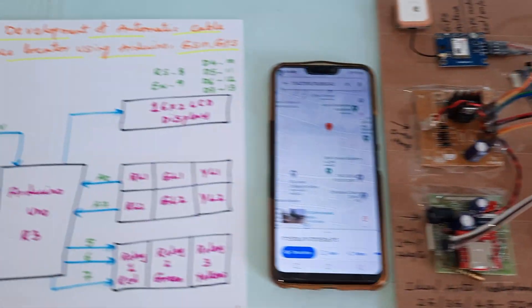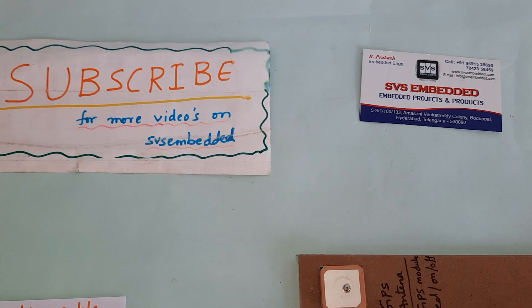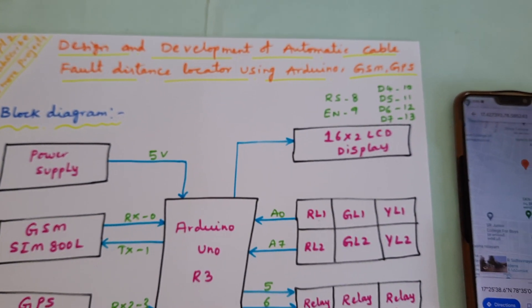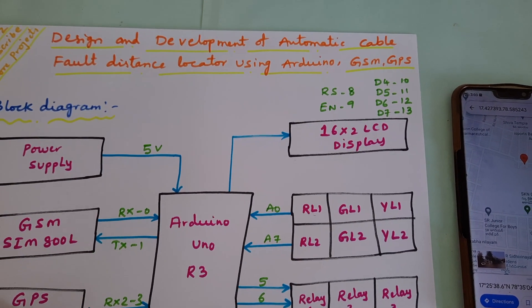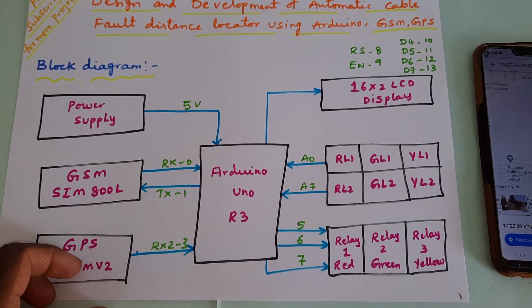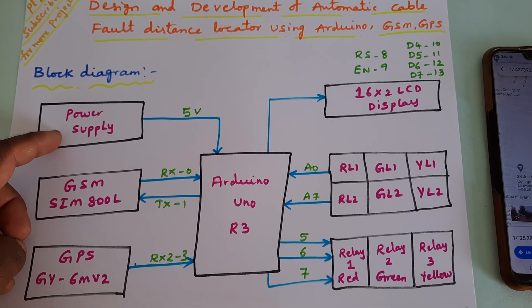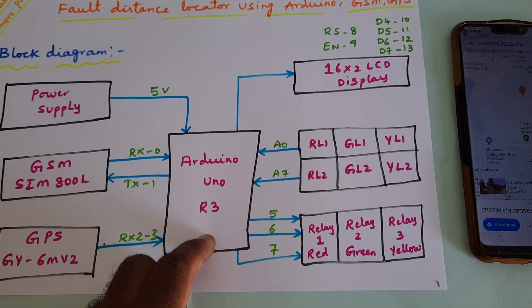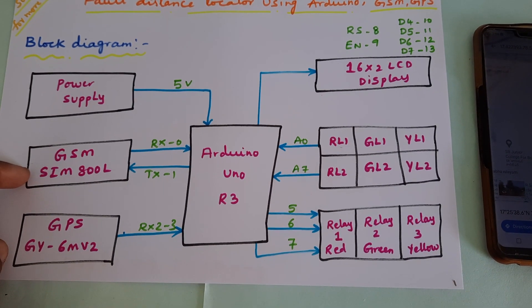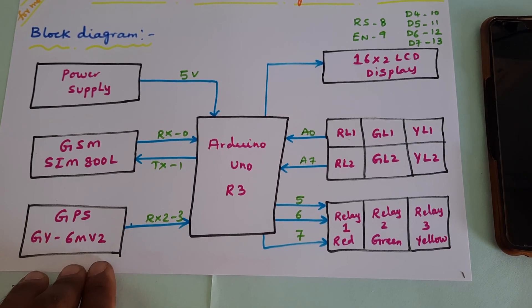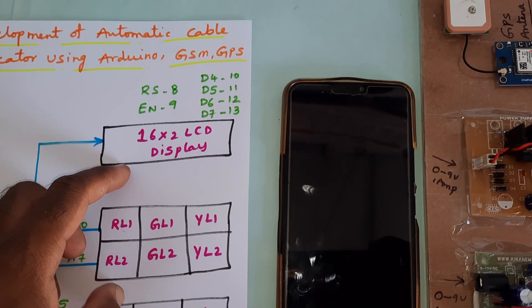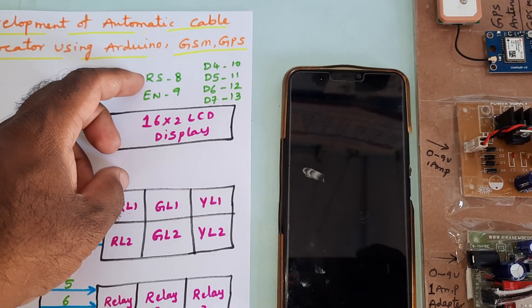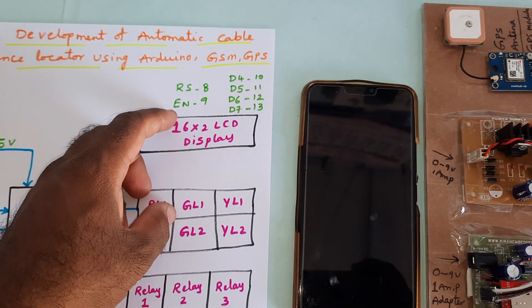Hi, we are from SVS Embedded. The project title is design and development of automatic cable fault distance locator using Arduino, GSM, and GPS. In this project we are using a 5-volt power supply module, Arduino Uno R3 board, GSM SIM 800, GPS module GY6M V2, and a 16x2 LCD character display. Whatever process is going on will be displayed on the LCD.